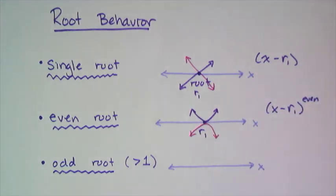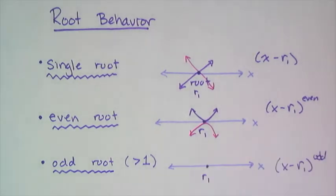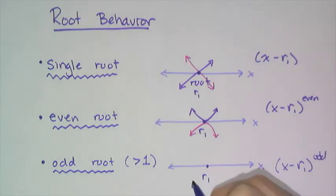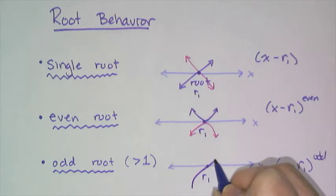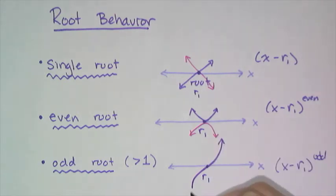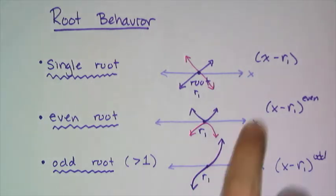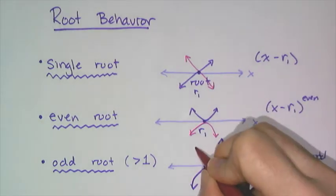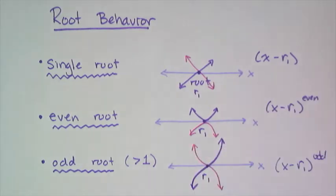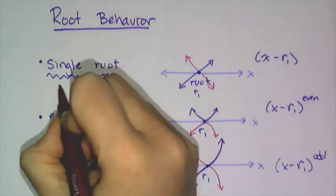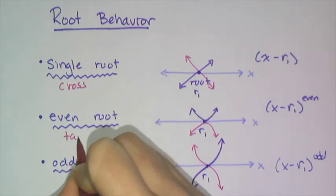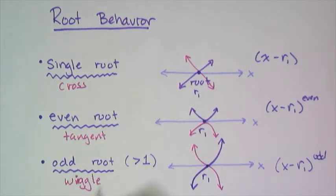If I have an odd root, then what I have is something I'm going to refer to as a wiggle. It's going to go through and give a little wiggle at the root, and then come back up. So instead of just going straight through, there's a little wiggle as it goes through the root. You either have an increasing wiggle or a decreasing wiggle. To summarize: single roots just cross through, even roots are tangent, and odd roots have a wiggle.